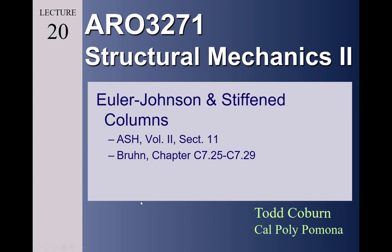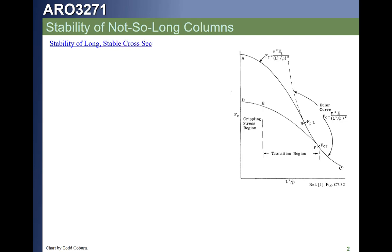Good morning, folks. This is Todd Coburn of Cal Poly Pomona with lecture 20 of Aero 3271. Today we're going to look at Euler-Johnson columns. This plot to the right summarizes how the strength of a part will transition from a stability failure to a block compression failure.